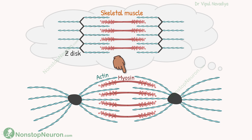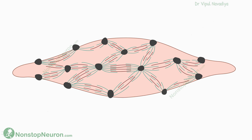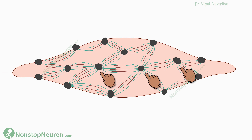In smooth muscle, the overall idea of keeping myosin in between actins is similar. But at the ends, instead of Z-discs, we have a structure called dense bodies. Actin filaments radiate from there, and in between actin filaments of two dense bodies, we have myosin filaments. There are many such random arrangements throughout the fiber. Some dense bodies are attached to the membrane, and others are dispersed inside the cell. This makes the contractile machinery of the cell.